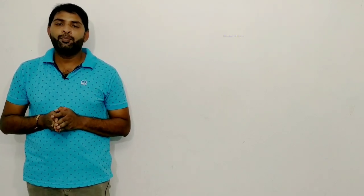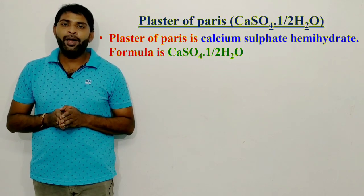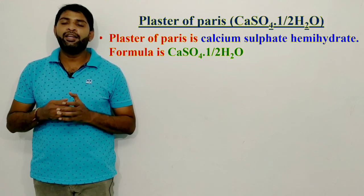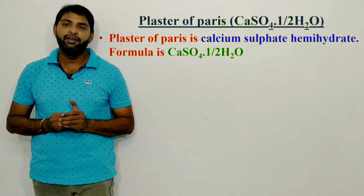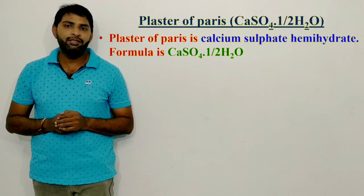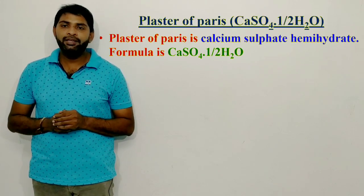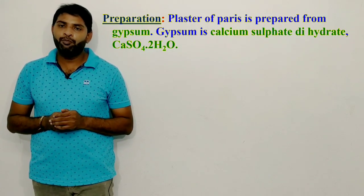Next, an important compound: Plaster of Paris. Plaster of Paris is calcium sulfate hemihydrate. Hemi means half, so its formula is CaSO4·½H2O.